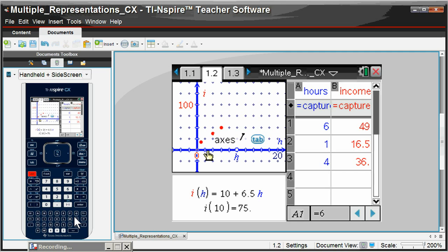As you'll notice, the calculator is not only graphing the point, but also plotting the ordered pair in the table at the right.